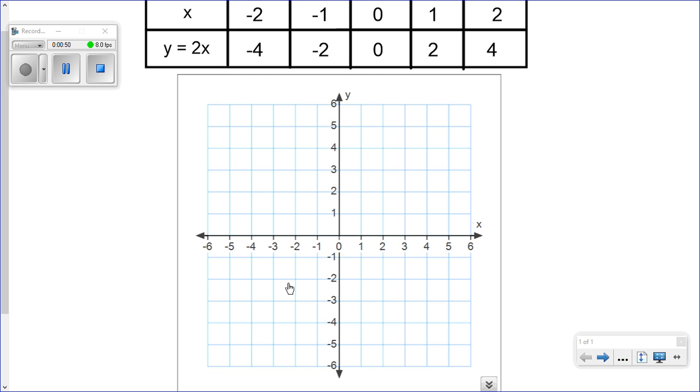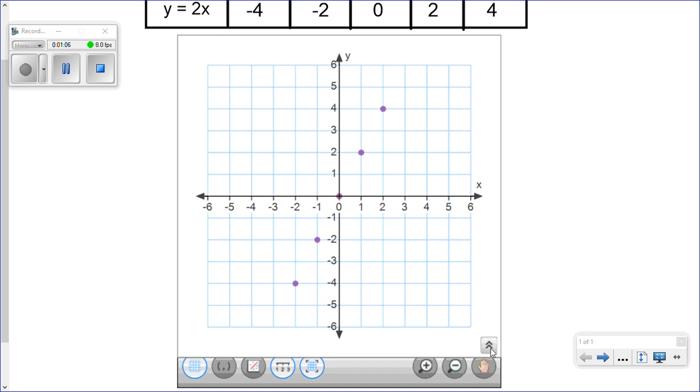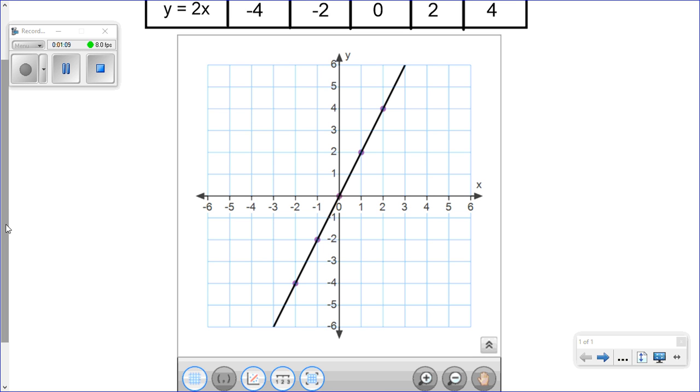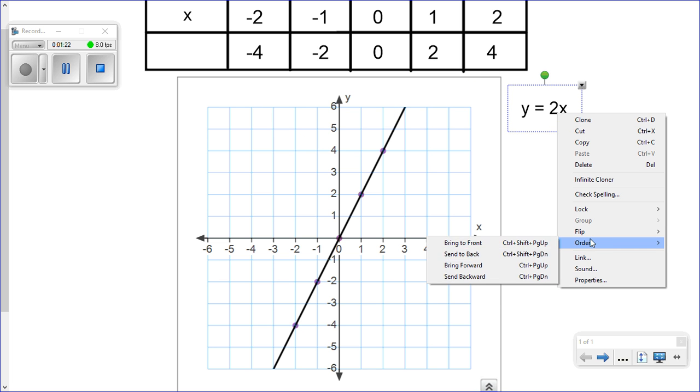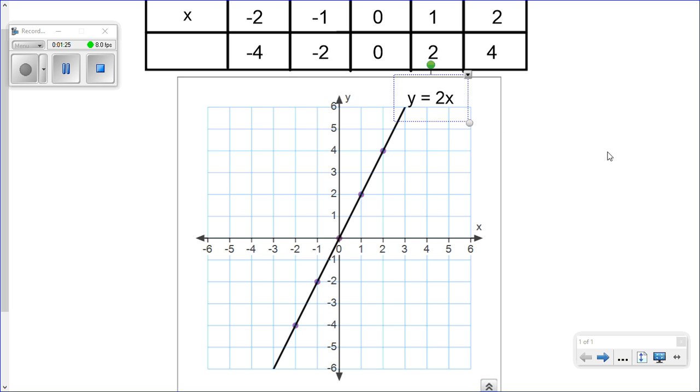So the first point, minus 2, minus 4 would be in that position there, and minus 1, minus 2, and 0, 0, and 1, 2, and 2, 4. So if we connect all those points together, we end up with our line graph, and the name given to this line graph is the rule which created our y values. So y equals 2x would be the name of this graph.